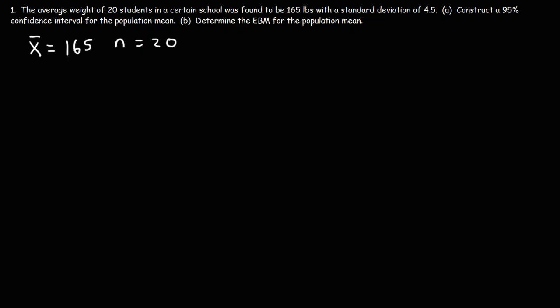A typical school is going to have more than 20 students — maybe a thousand or four thousand. So the 20 students in our study represents a small sample of all the students in the school. Therefore, this is the sample standard deviation, which is 4.5.